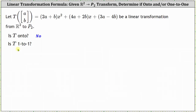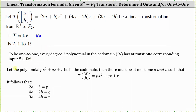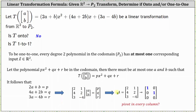Now let's check if the transformation is one-to-one. To be one-to-one, every degree-two polynomial in the codomain P2 has at most one corresponding input vector x in R2. Assuming the same polynomial Px² + Qx + R, there must be at most one A and B such that the transformation of the vector equals Px² + Qx + R. The result is the same system of equations, the same matrix equation, and the same transformation matrix in reduced row echelon form. Notice that we do have pivots in every column, which indicates the transformation is one-to-one. This makes sense because pivots in every column mean no free variables, so the system has either zero or one solution — meaning every polynomial in P2 has at most one corresponding input vector x in R2.